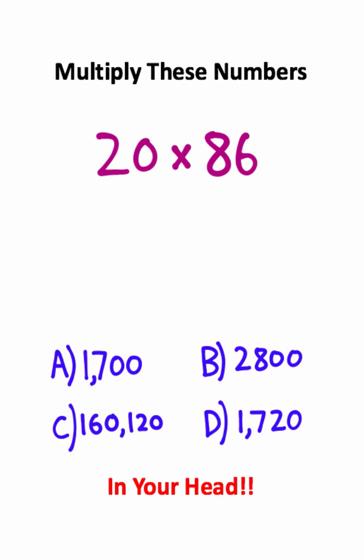Two times eight is sixteen, and then I add the two zeros, that's sixteen hundred. Two times six is twelve, and I add a zero, that's one twenty.